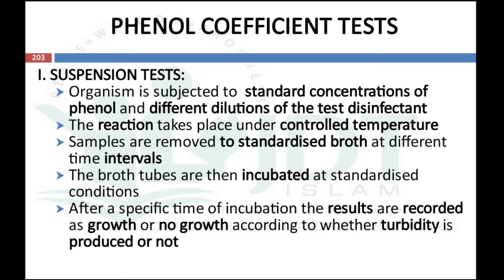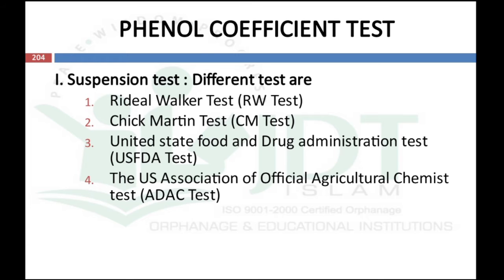In the suspension test, the organism is subjected to a standard concentration of phenol and different dilutions of test disinfectant. The reaction takes place under controlled temperature, and samples are removed to standardized growth at different time intervals. These growth tubes are incubated at standardized conditions. After a specific incubation time, results are recorded as growth or no growth according to whether turbidity is produced or not. Suspension tests for phenol coefficient can be done using the Rideal-Walker test, Chick-Martin test, US FDA test, or the US Association of Official Agricultural Chemists (AOAC) test.